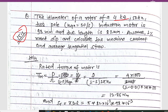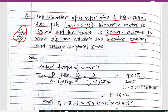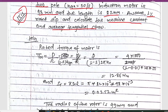The problem involves a rotor of a 4 kW, 50 Hz, 2-pole induction motor. The synchronous speed is given as 50 per second, efficiency is 90%, diameter is 98 mm, length is 82 mm, and rated slip is 1%. We need to calculate the machine constant and average tangential stress.